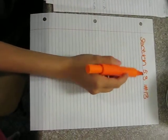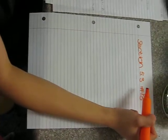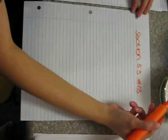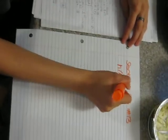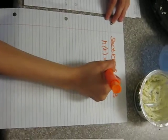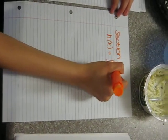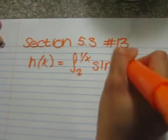Alright, so today we're doing section 5.3, number 13. The problem is h(x) equals the integral from 2 to 1/x of sine(4t) dt.